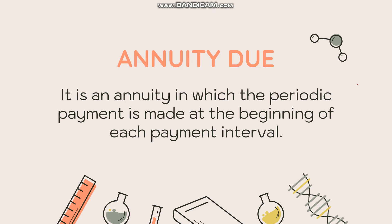Now let's discuss annuity due. The difference from ordinary annuity is that the periodic payment is made at the beginning of each payment interval. Using the house rental example: if you start renting on December 3, under annuity due you must pay immediately on December 3 — that is your first payment, at the beginning of the payment interval.